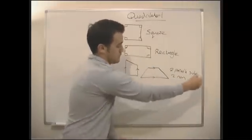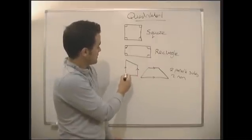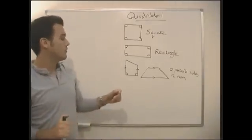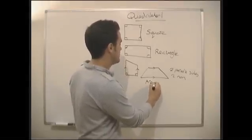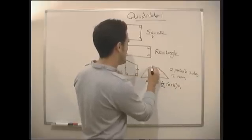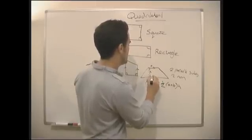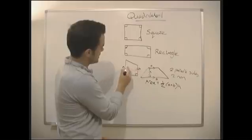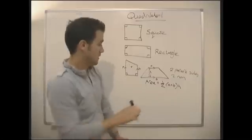By parallel we mean they basically run straight along exactly the same direction as each other. This is called a square-based trapezium because it's got a sort of squarish base. We need to know an equation for the area of a trapezium — we're actually given it in our exam booklets. Area of a trapezium is half (a + b) × h, where a is the top, b is the bottom, and h is the height.